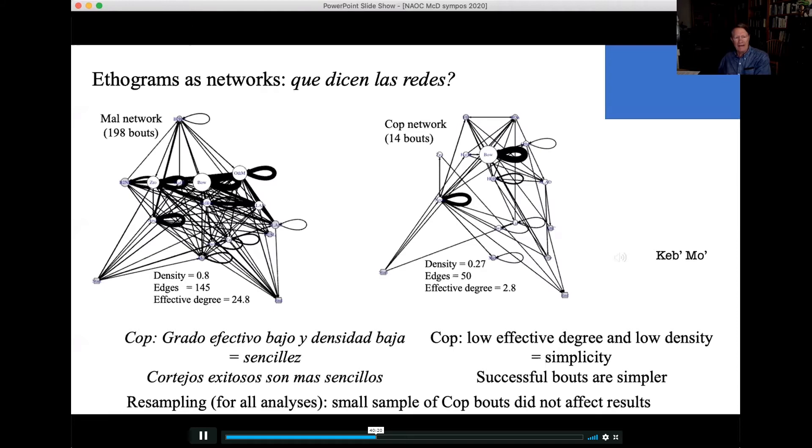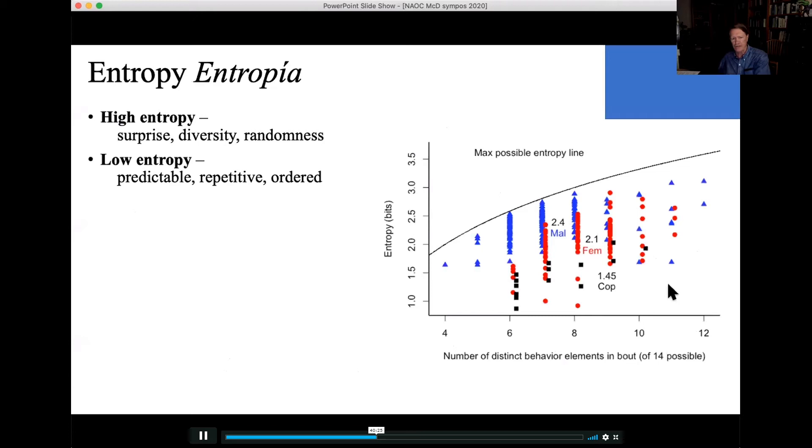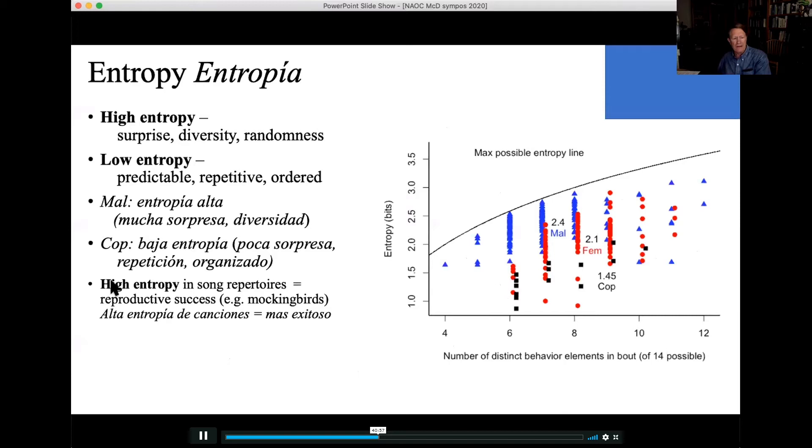And again, not because of sample size, because resampling these, we get the same story, and that's true for all these analyses. I want to go through entropy pretty quickly. High entropy means high surprise, diversity of elements, considerable randomness. Low entropy: very predictable, repetitive, ordered. Male bouts, the blue, high entropy, sometimes almost up to the theoretical maximum. Cop bouts, very low entropy, ordered, repetitive, repeated elements. And that's in contrast to what we find in song repertoires, for example, in mockingbirds, where high entropy is linked to reproductive success. Here, low entropy is linked to success, and the male cop displays are quite simple.